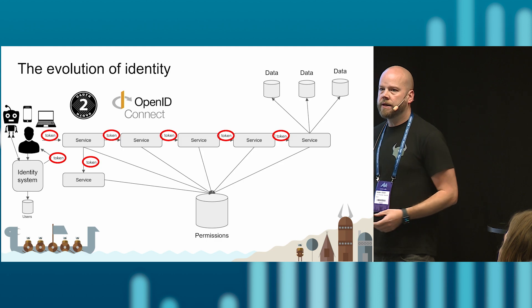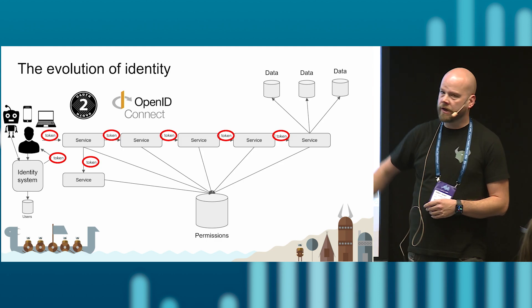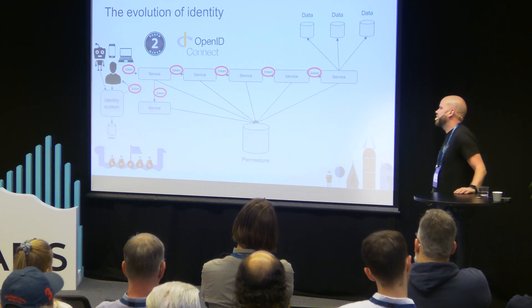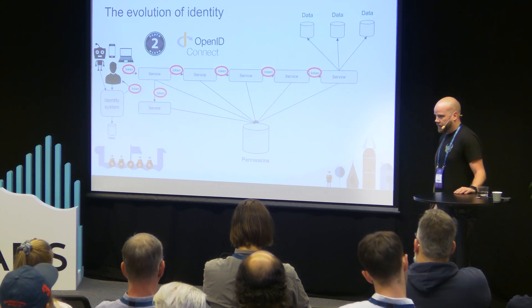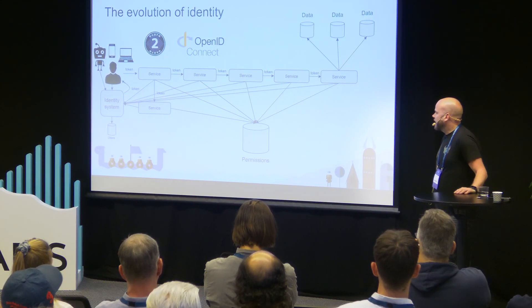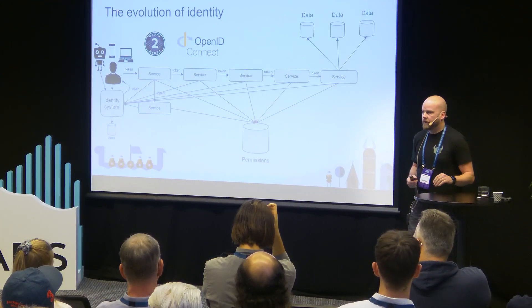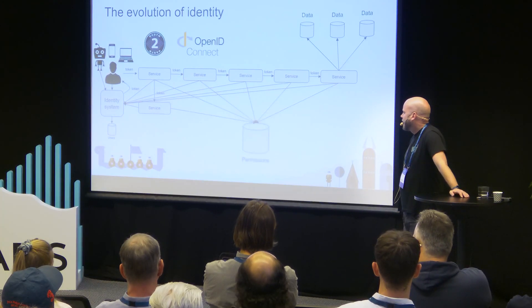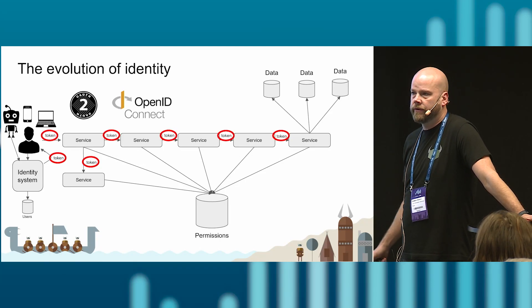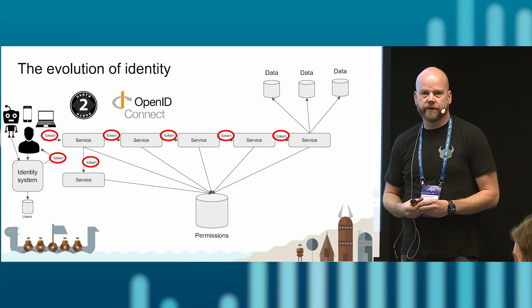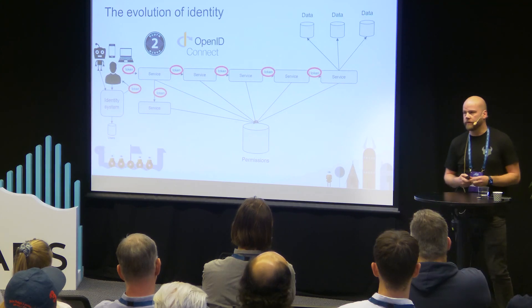OpenID Connect defines one type of token that describes the user, but doesn't address how to identify as a machine or IoT device — it provides no solution for that. So another standard is clearly needed to describe all the clients authenticating in our system. One problem is that if we don't know what a token is, a traditional approach has been to use an opaque identifier — like ABC123 — but our services have no way of knowing what that means or who it represents.